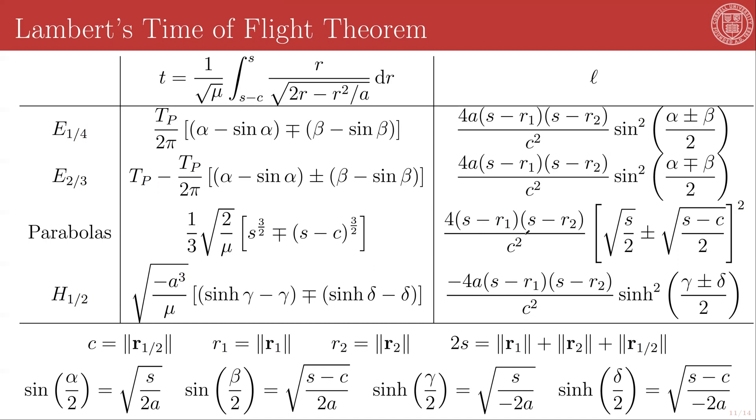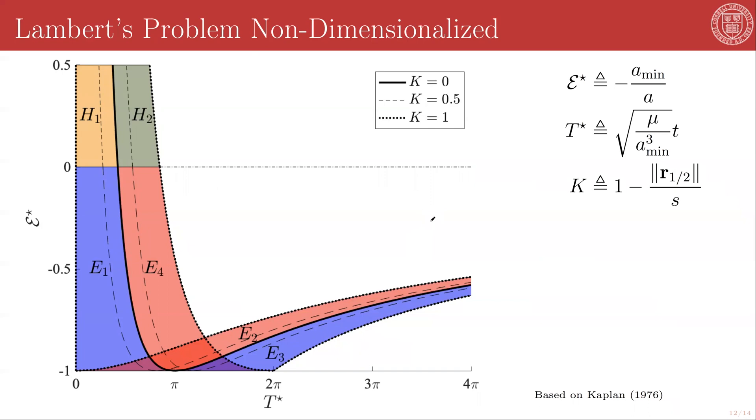So we have now characterized every possible two-body transfer between two fixed points, P1 and P2. We can non-dimensionalize this problem, again, following the example of Kaplan, 1976.